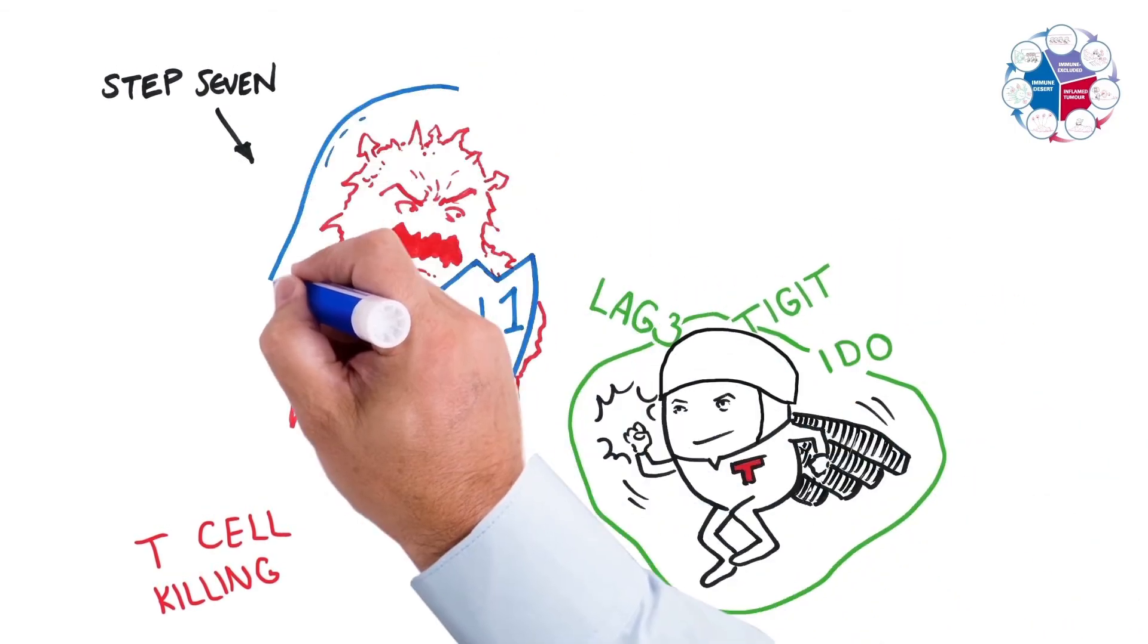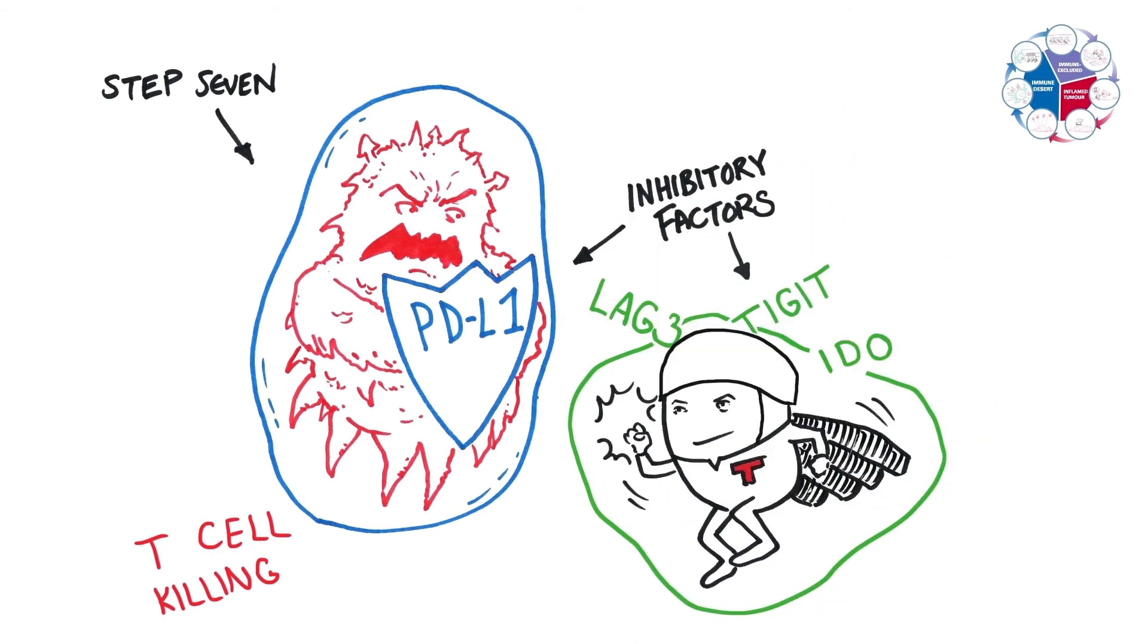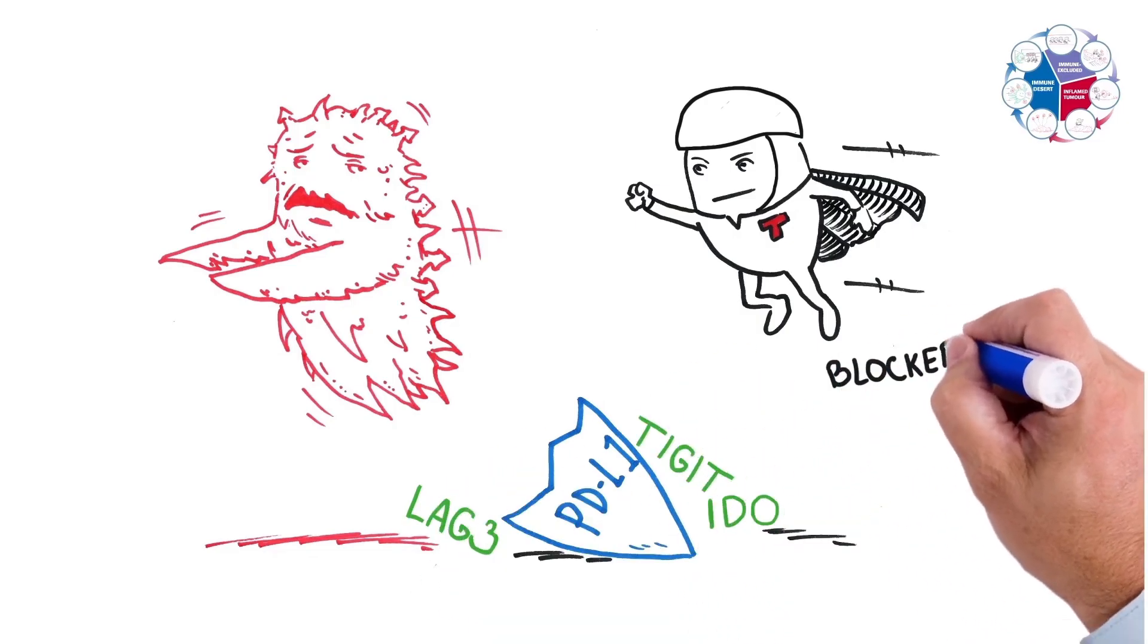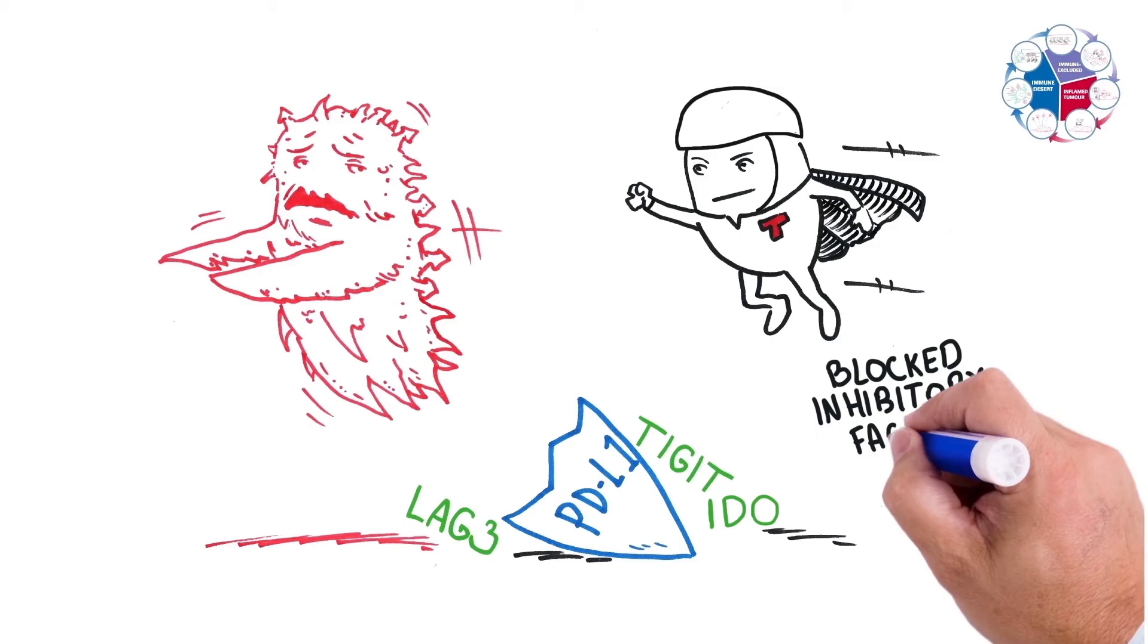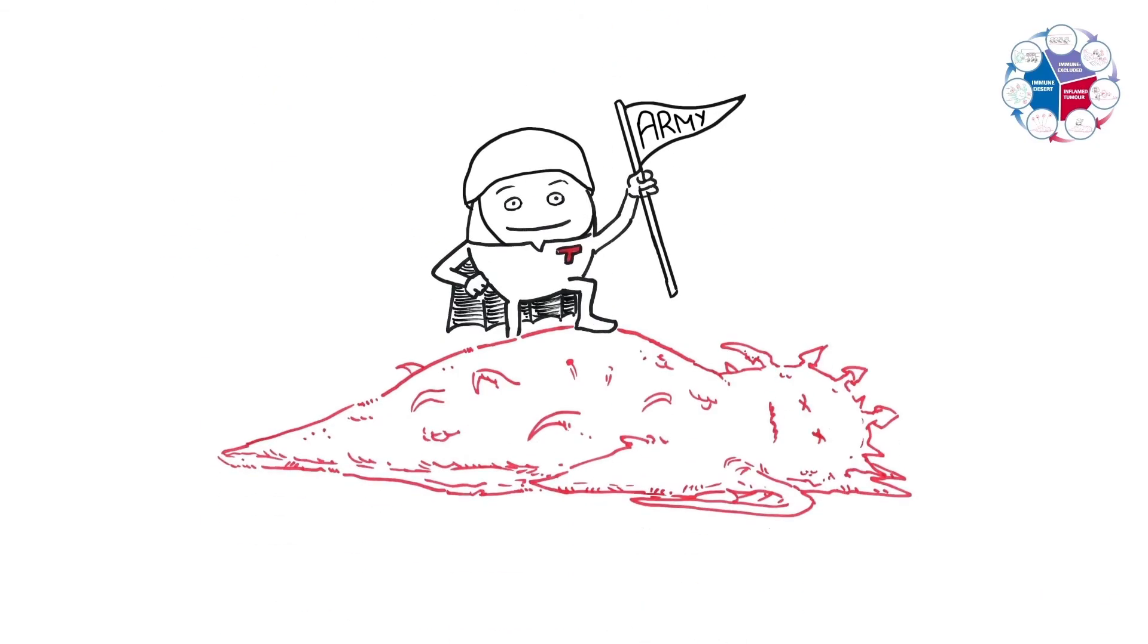There are many inhibitory factors that can prevent a T cell in step seven from actually killing those cancer cells. Blocking PD-L1 and or other inhibitory factors may be one way to allow those activated T cells that recognize the cancer cell to kill it.